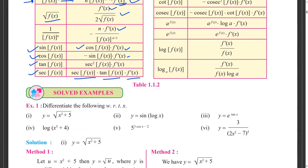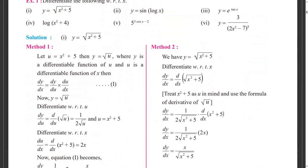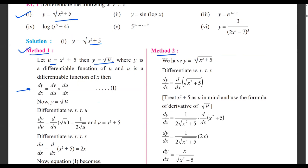Yesterday we solved a few problems related to composite functions. For example, if we have to differentiate y equals under root of x square plus 5, we can solve it using two methods. In Method 1, whatever part is inside the square root, we treat it as u. So we treat x square plus 5 as u, making y equal to under root of u. Then we use the composite function differentiation to solve it. Let me share the whiteboard and explain in detail.